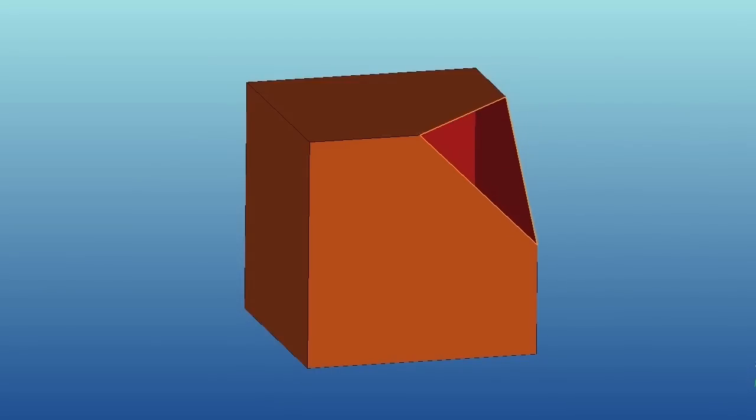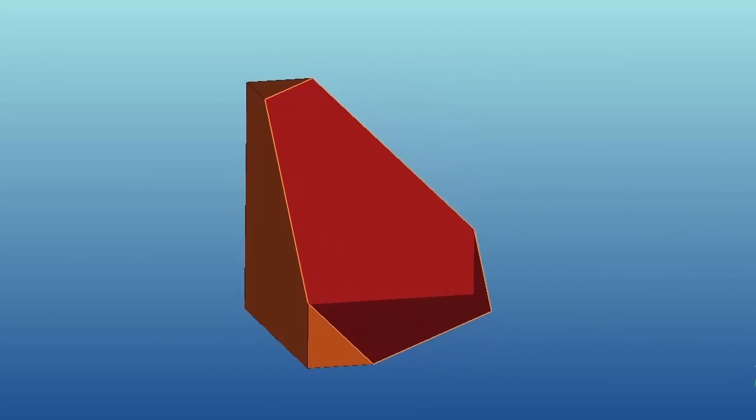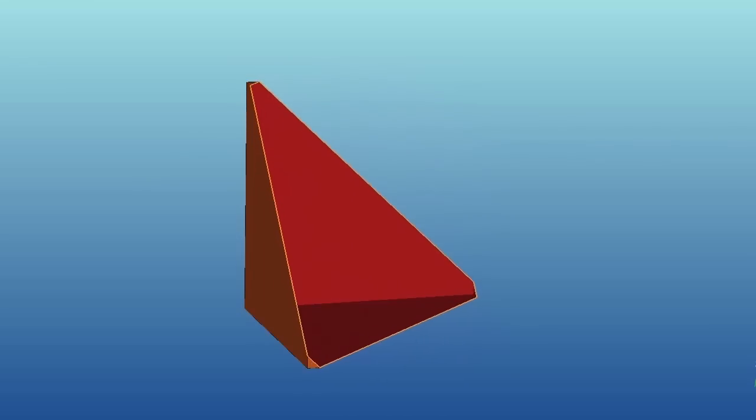As a warm-up, what if we slice an ordinary cube this way, one without holes? A shallow cut touches three faces, so it gives a triangular cross section, but deeper slices touch all six faces and give hexagonal cross sections.